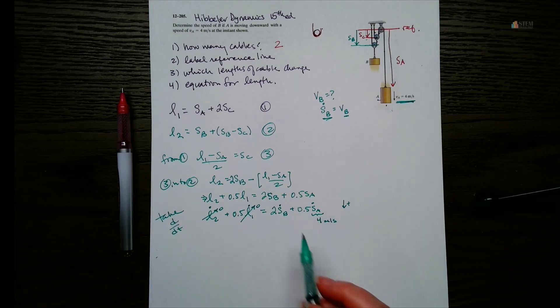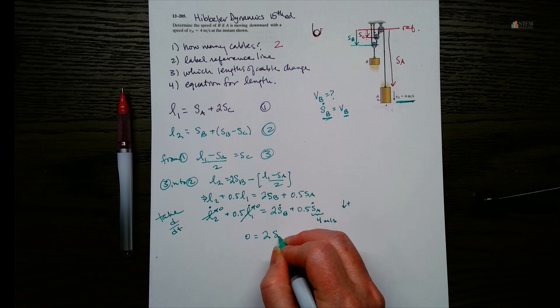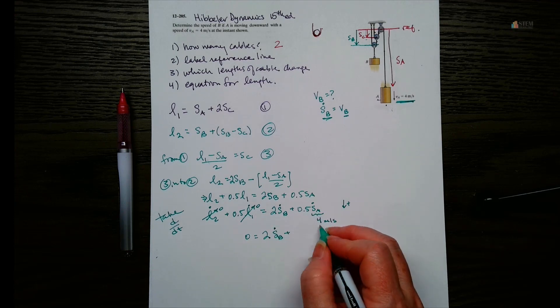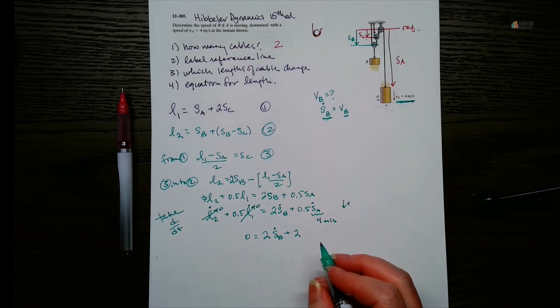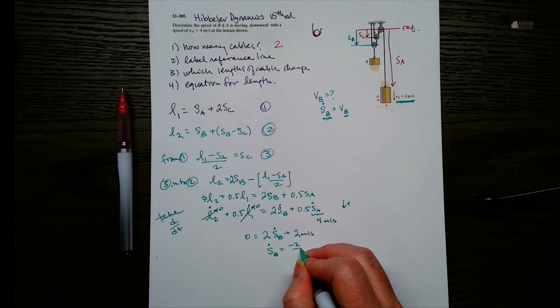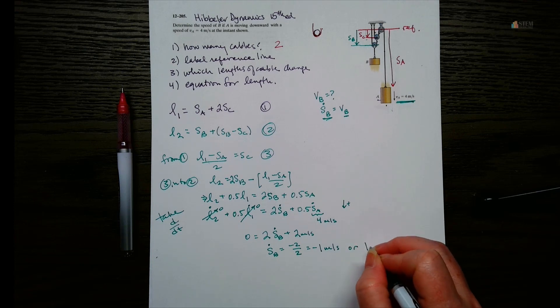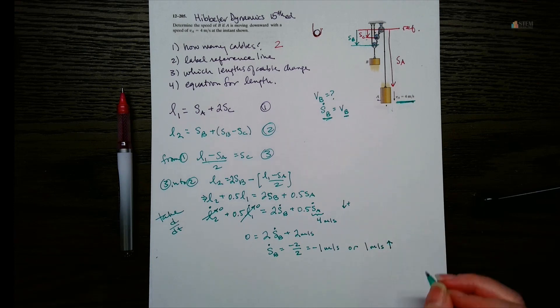And then all we have to do is solve for SB dot. So we'll have 0 equals 2 SB dot plus 0.5 times 4, which is 2. That's meters per second. So SB dot, then this will move over, become negative. So we'll have negative 2 over 2, which is negative 1 meter per second, which means we have 1 meter per second going upward.